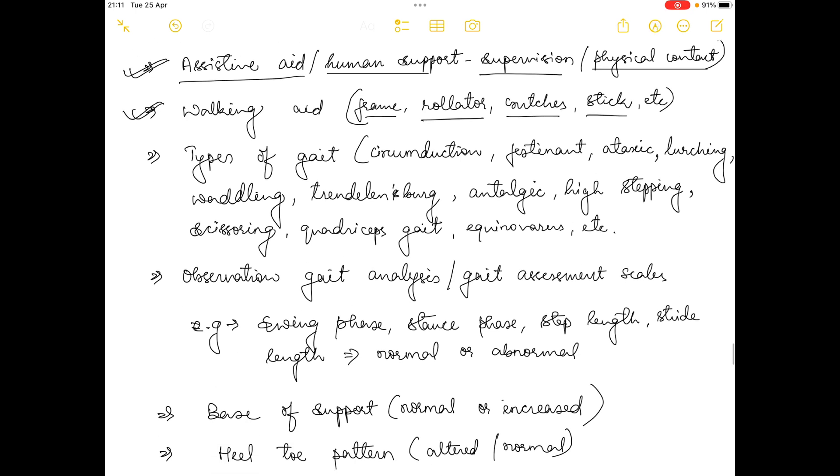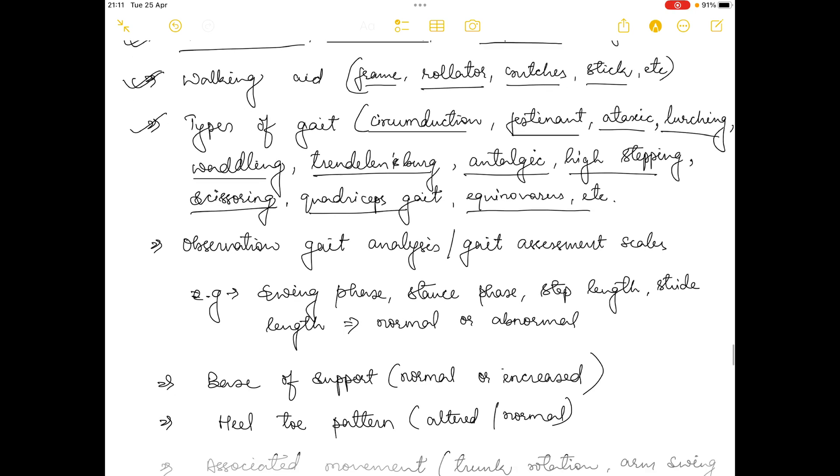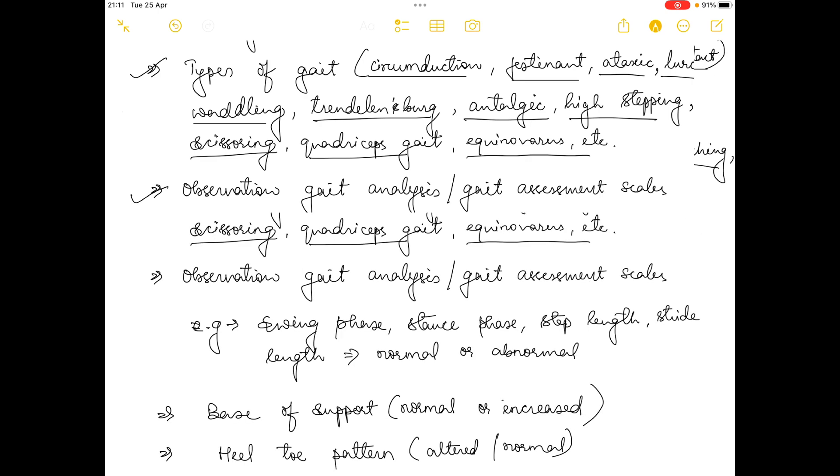You could also assess the types of abnormal gait. There are many kinds of abnormal gaits. I've already uploaded few videos on abnormal gait and the series isn't finished yet, so in upcoming videos I'll finish all videos on abnormal gait patterns. There are various kinds of abnormal gaits such as circumductory gait, festinant gait, ataxic gait, lurching gait, waddling gait, Trendelenburg gait, antalgic gait, high-stepping gait, scissoring gait, quadricep gait, equinovarus gait, and many more.